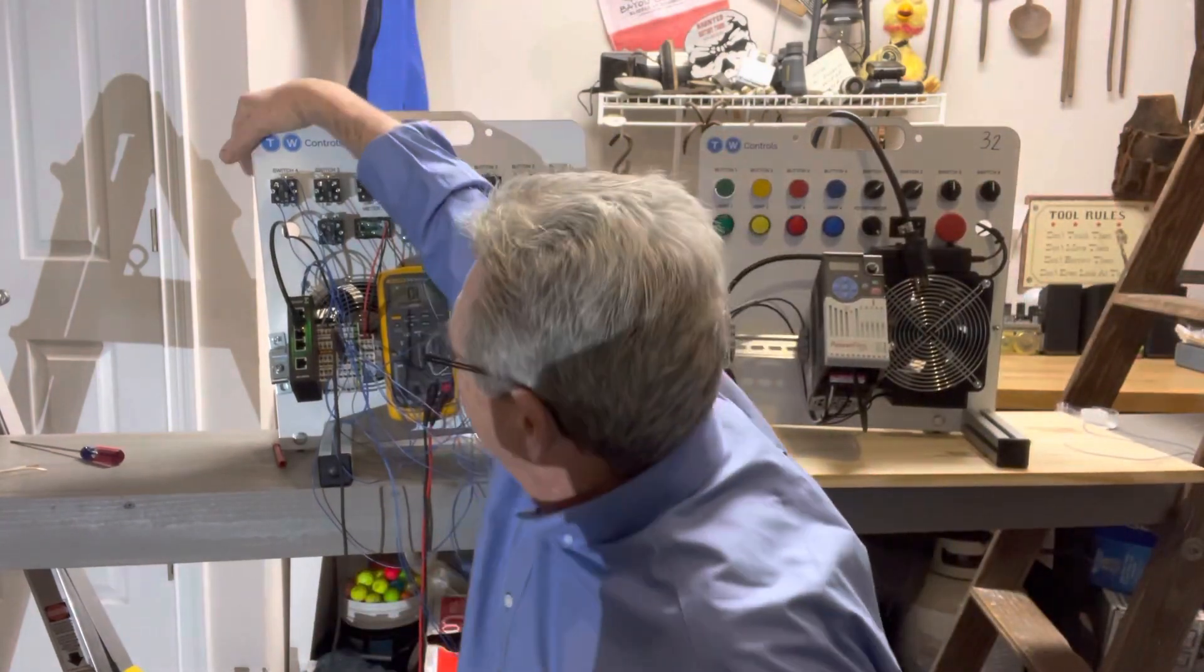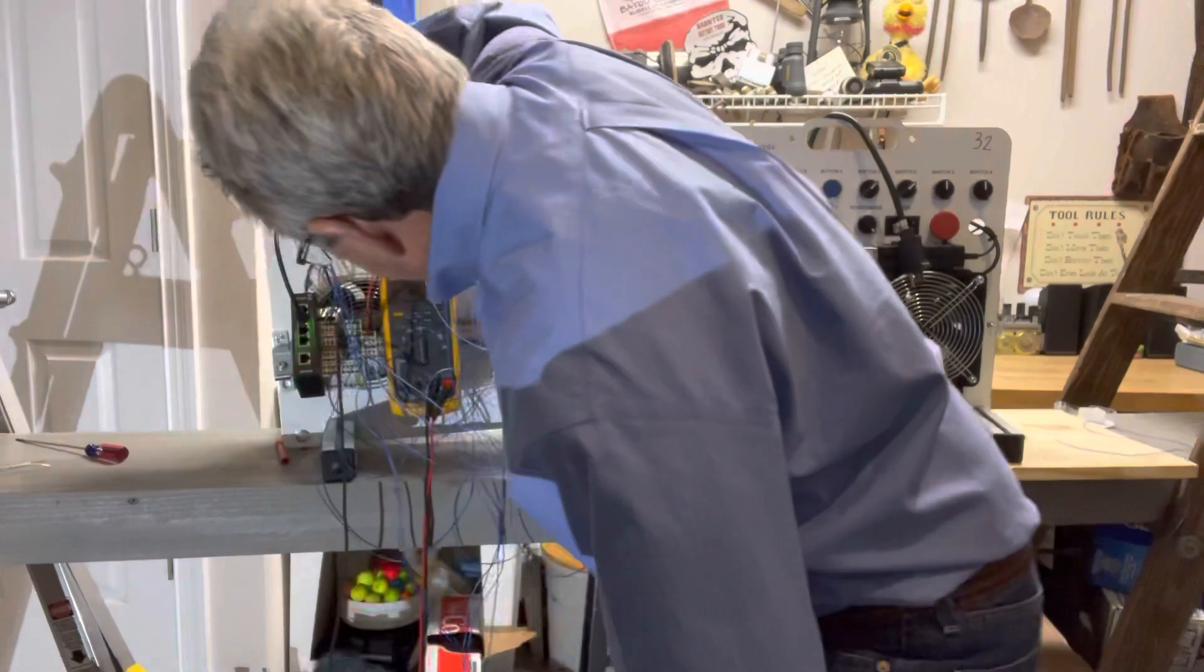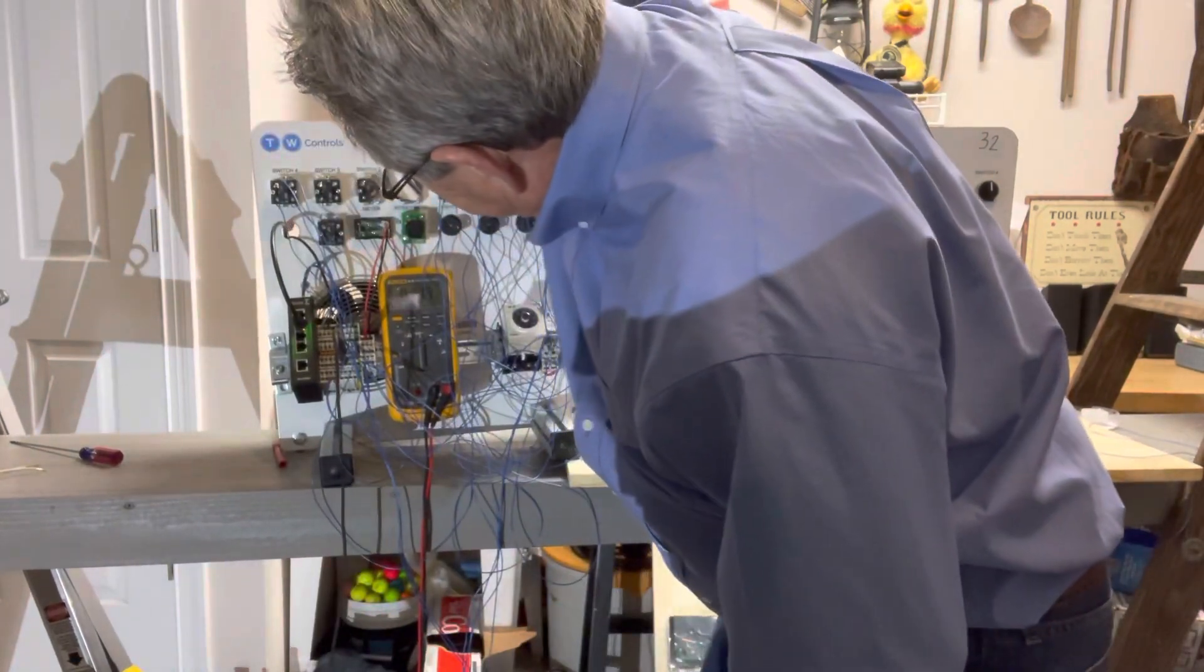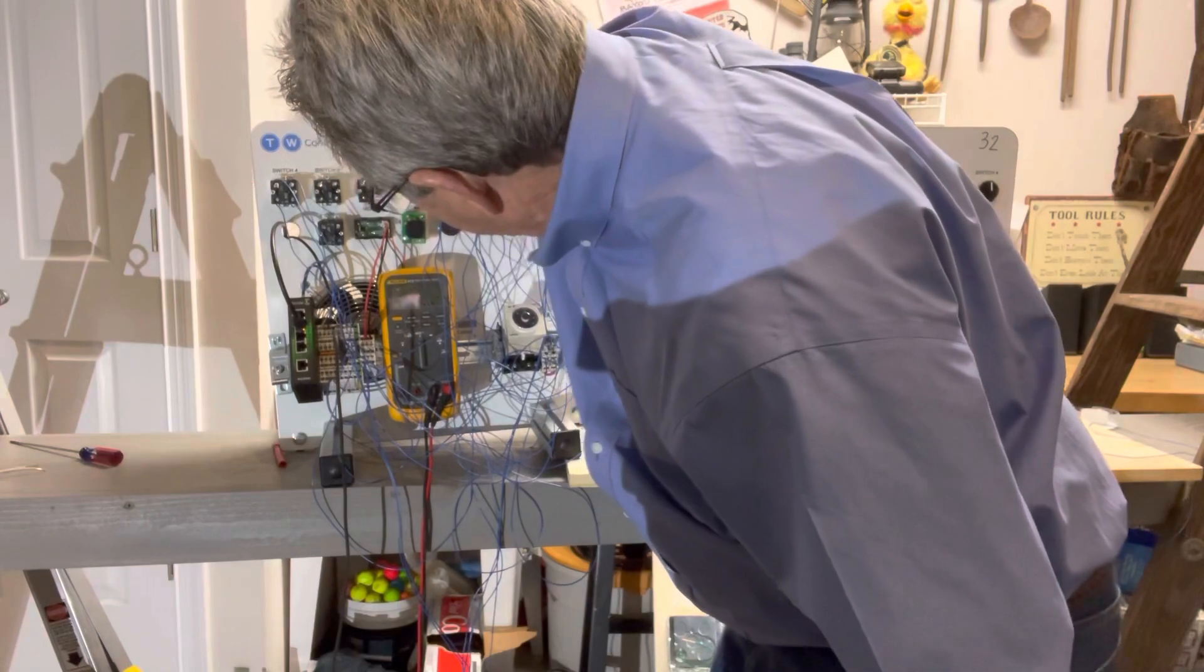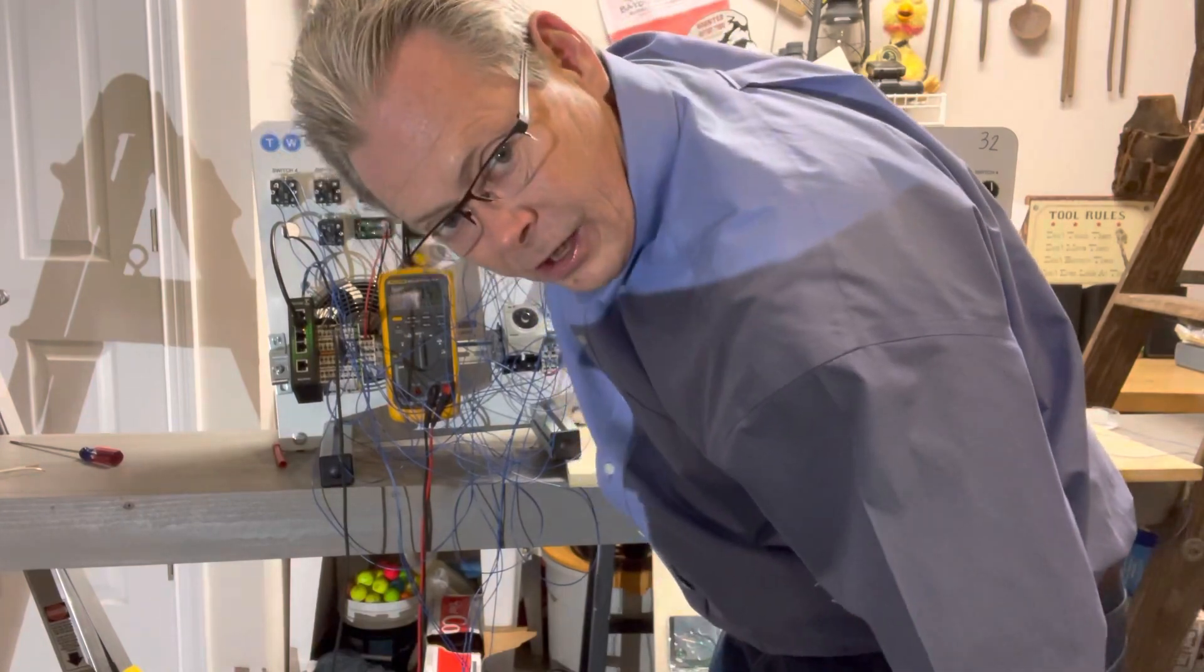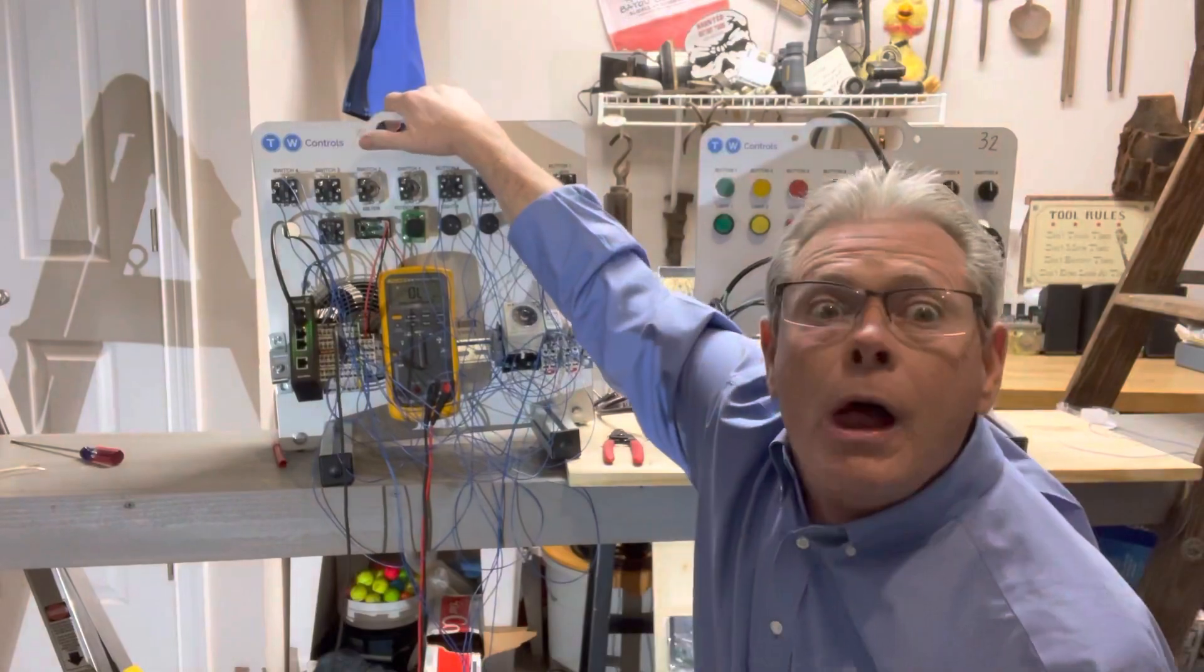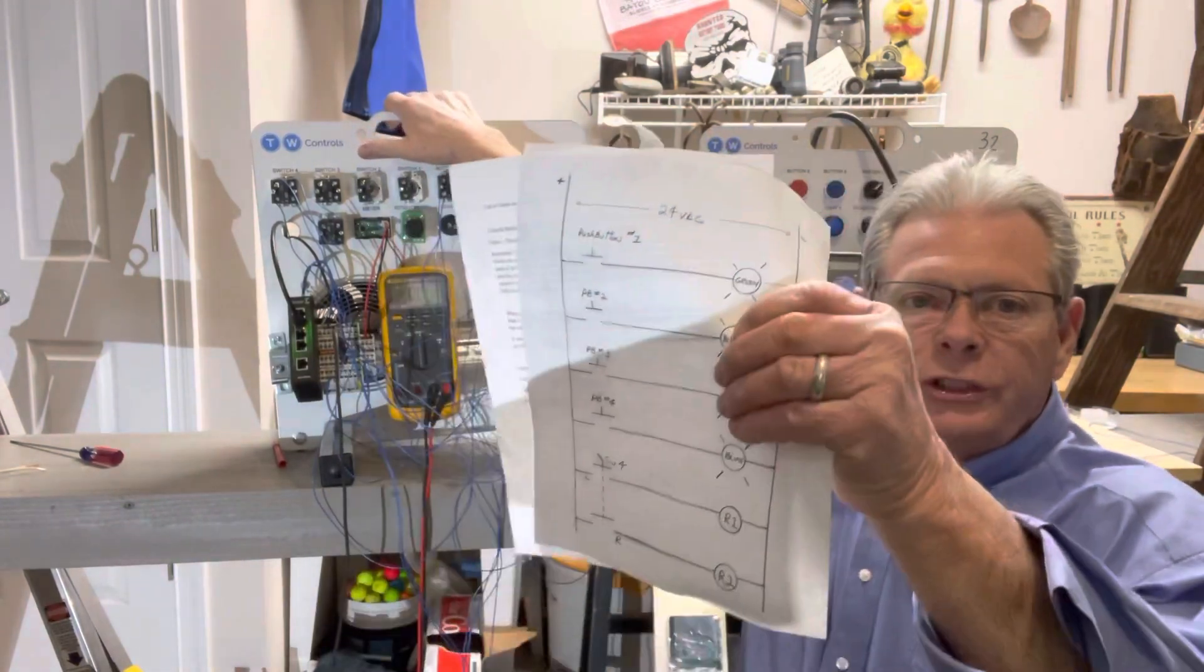So when I turn the top of it to the left, 700 ohms. Turn the top of it to the right, 600 ohms. Turn it to the center, OL. That's what we should have. That agrees with our print.